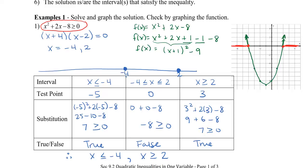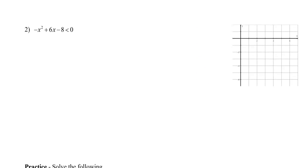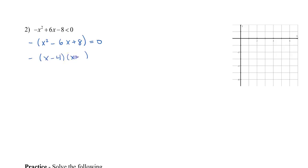Let's take a look at another example, this time without the chart to show what you need to show in your work. First thing, I need to find my roots, so I need to do some factoring. I'm going to factor out the negative first — I don't like to have a negative in front of the x squared. So I have x squared minus 6x plus 8, set equal to 0. This factors to be x minus 4 and x minus 2 equal to 0, so my two roots are 4 and 2.